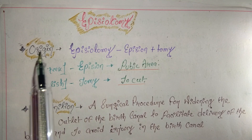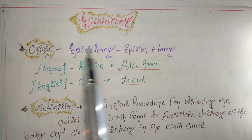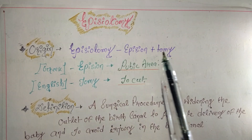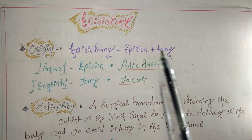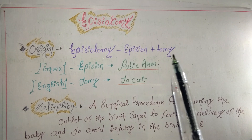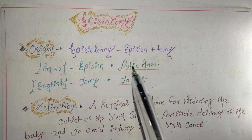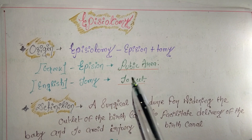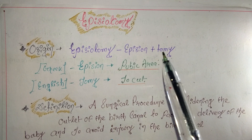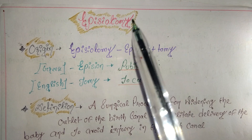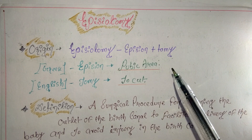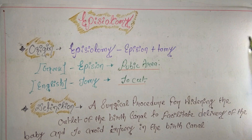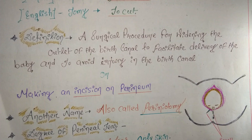Let's understand the origin of the word 'episiotomy.' It is derived from two words: 'epision' and 'tomy.' Epision is a Greek word meaning pubic area, and tomy is an English word meaning to cut. So episiotomy means to make a small cut in the pubic area.